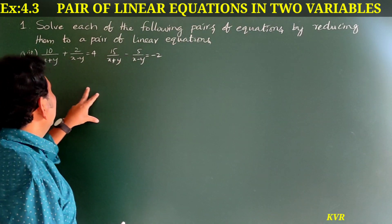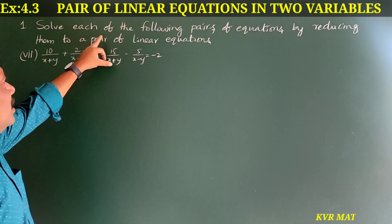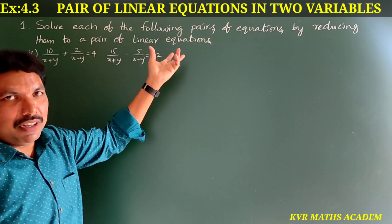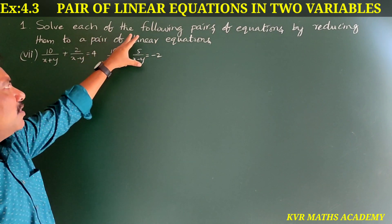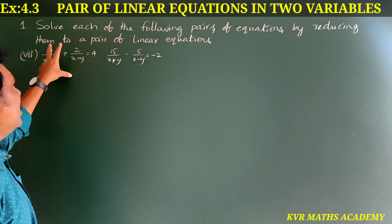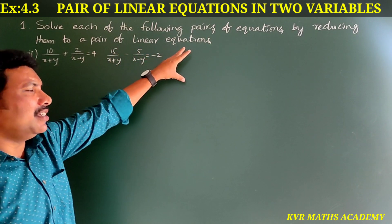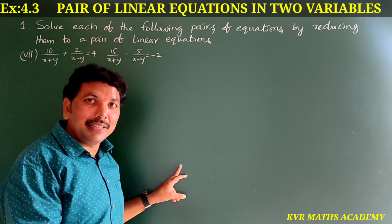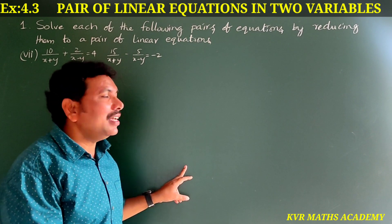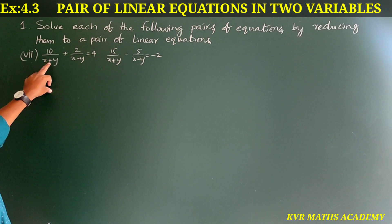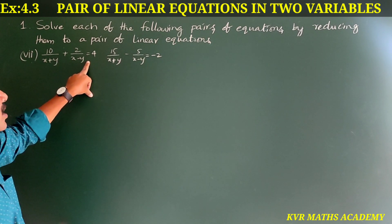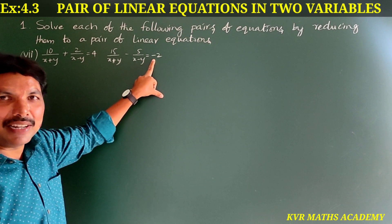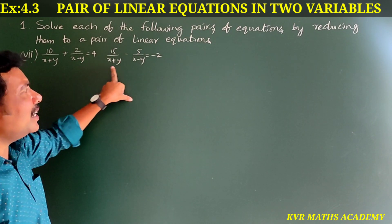The question says: solve each of the following pairs of equations by reducing them to a pair of linear equations. This is the seventh question — the first six have been explained in previous videos. The given equations are: 10/(x+y) + 2/(x−y) = 4, and 15/(x+y) − 5/(x−y) = −2.